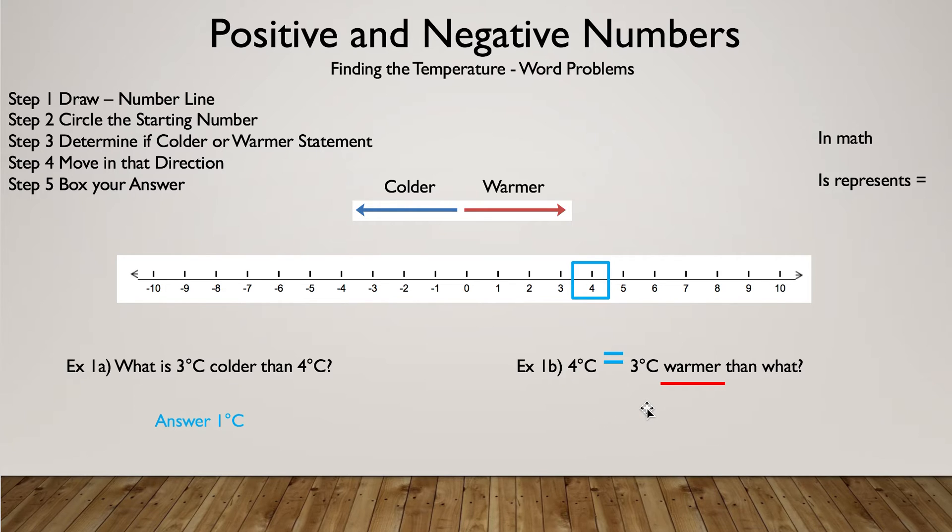Warmer. So that means we are going to go, we don't know which way. We could go left or right. But if we follow the line over this graph right here, that means warmer has to be on the right. Always. So we're going to get rid of that. That means my starting number is to the left of warmer. So we go to the left three times. One, two, and three. We're going to circle the starting number. So that means my answer is one degree Celsius.